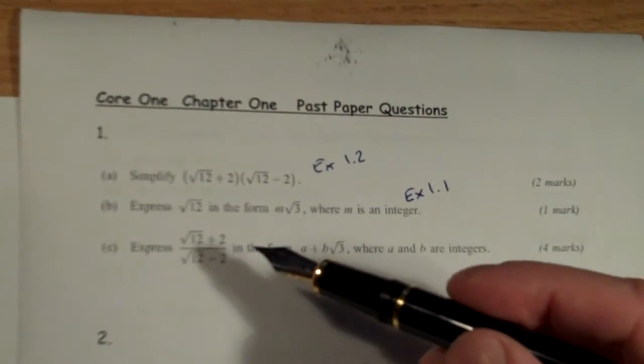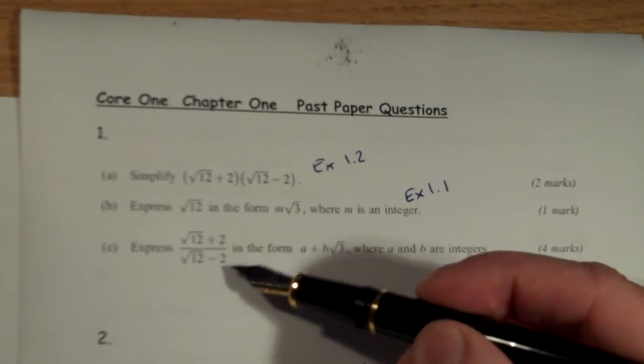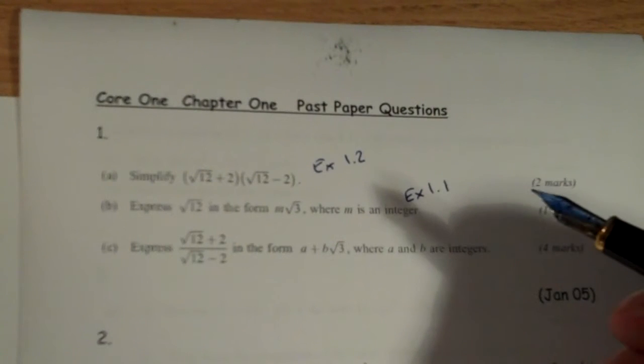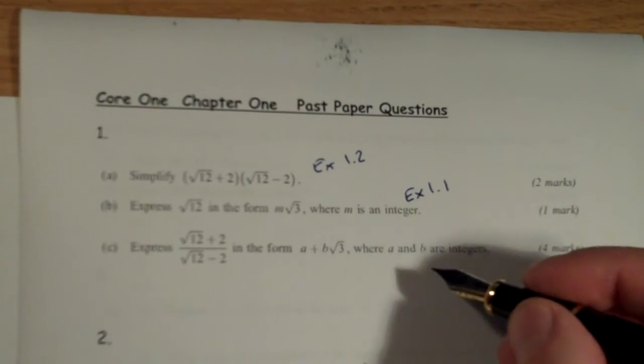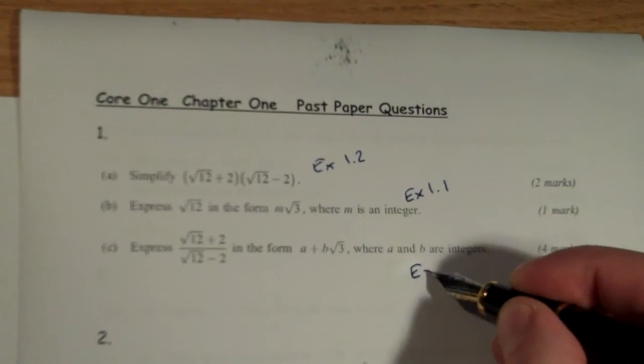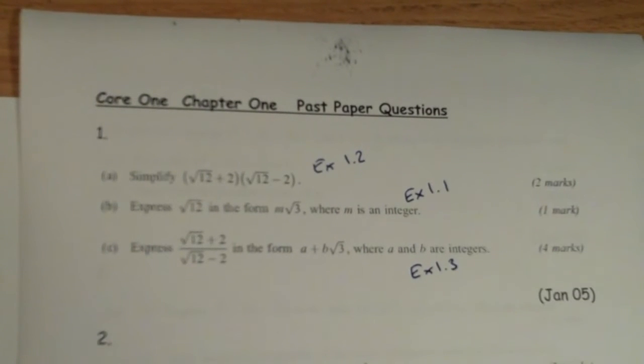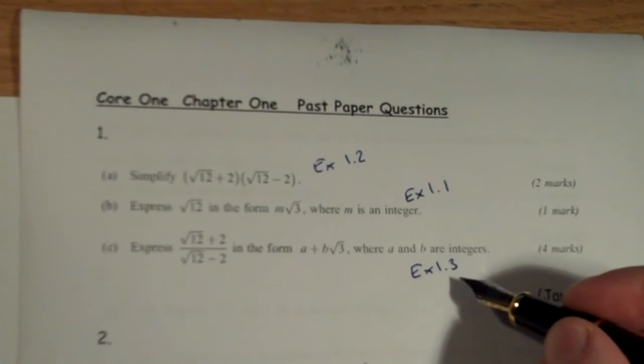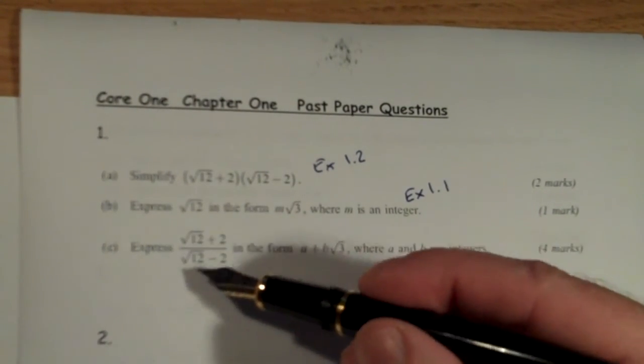And part C, where we have to simplify a fraction with surds in both places. That's a little bit further on in your notes, in example 1.3, I think. Yeah, the later parts of example 1.3 show you how to simplify that.